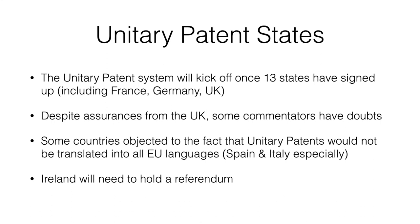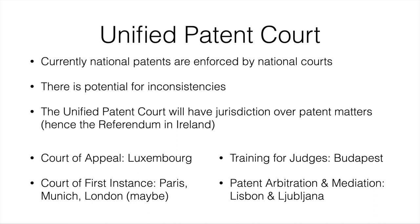This has been at the 'any day now' stage for many years, so we'll see what happens. The idea is that national patents are enforced by national courts, which can lead to inconsistencies. The proposal includes a European patent court with courts of first instance in Paris, Munich, and London — though with the UK leaving the EU, London is unlikely. There would be a court of appeal in Luxembourg and a training centre for judges in Budapest. You can see how it's all spread around — everybody got a bit of something.